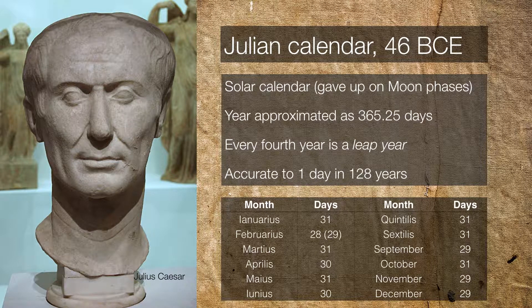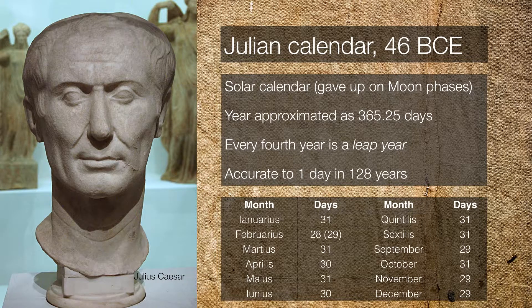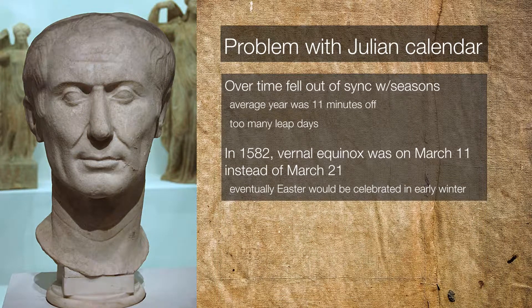This approach was accurate to about one day in every 128 years. What that means is, if you take for example the day of the vernal equinox — we know today it should occur on or about March 21st of every year — it turns out this calendar did a reasonably good job of it. It was introduced on January 1st, 46 BC. But the problem was that over time, it did start to drift out of sync with the seasons.